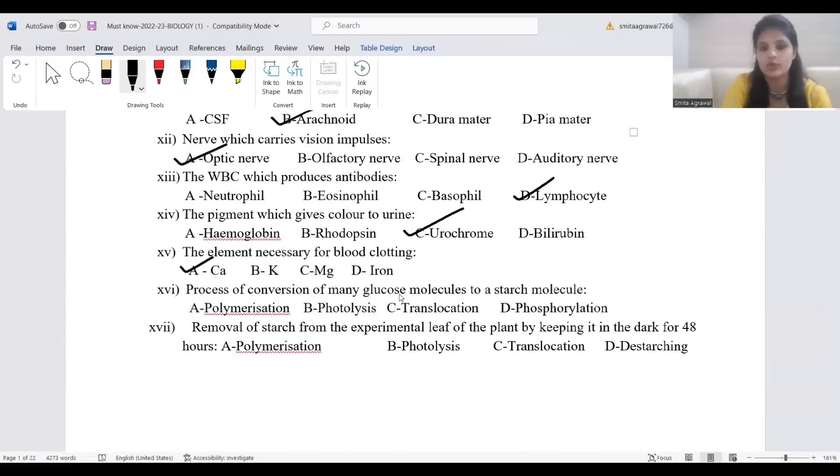Process of conversion of many glucose molecules into starch, the correct answer is polymerization. Photolysis: breakdown of water molecule in presence of light. Translocation: transfer of food from the region where it is formed to the area of storage. Photophosphorylation: the conversion of ADP into ATP in presence of light. Removal of starch from the experimental leaf is known as de-starching.